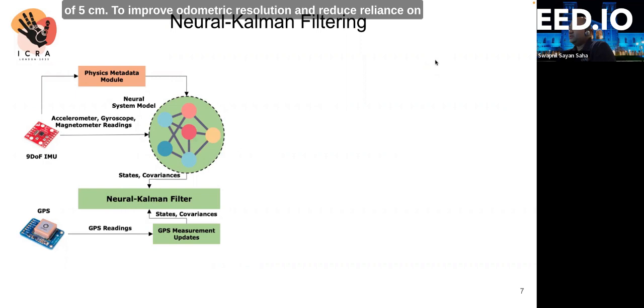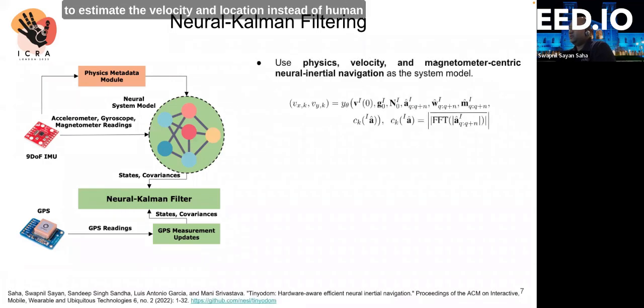To improve odometric resolution and reduce reliance on GPS for INS, we propose using a neural network to estimate the velocity and location instead of a human-designed system model. The neural network first estimates the velocity from a window of IMU readings, which is converted to position using a constant velocity model. We add a physics-inspired channel based on the fast Fourier transform of accelerometer readings to act as a transportation mode detector. This prevents the neural network from regressing invalid displacements. The magnetometer acts as an additional reference anchor besides gravity, and the velocity-centric formulation counteracts heading singularity.